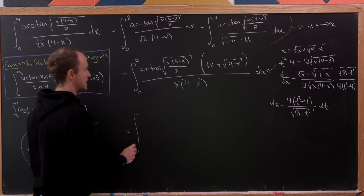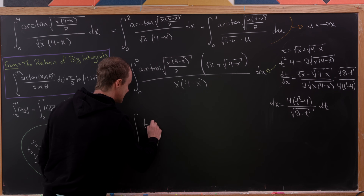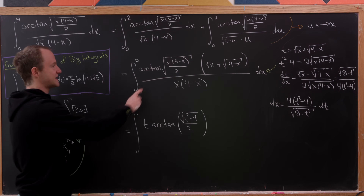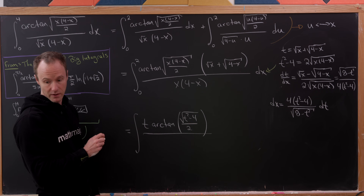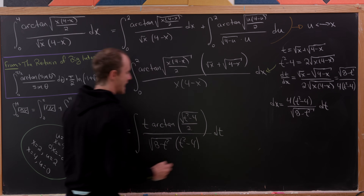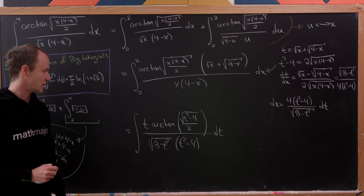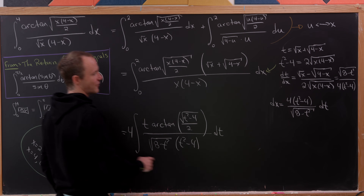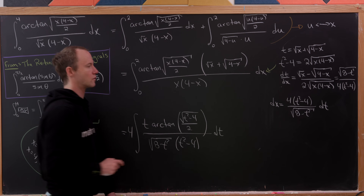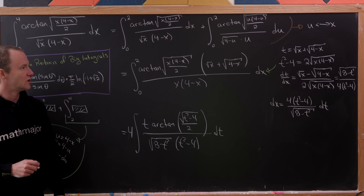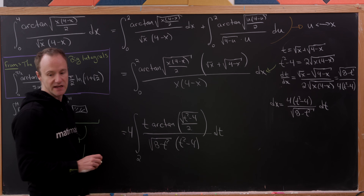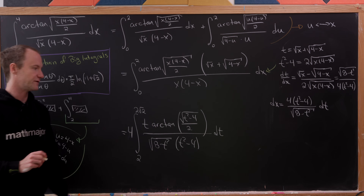Substituting everything in, we get t times arctan of √(t²−4)/2 in the numerator, and √(8−t²)·(t²−4) in the denominator, with a factor of four out front. For the bounds: when x equals zero, t equals two; when x equals two, t equals 2√2.